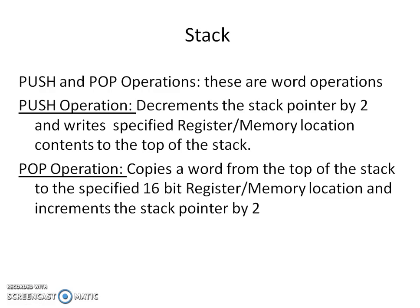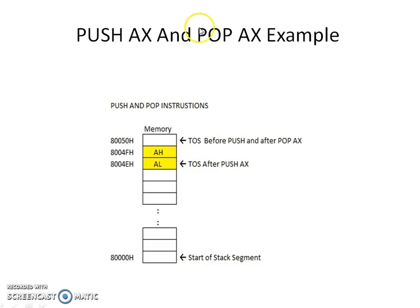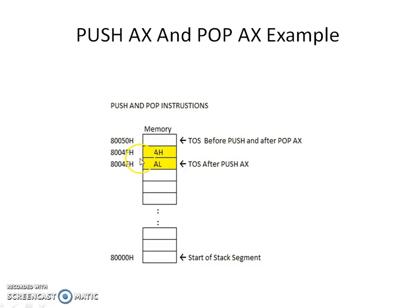Looking at the stack segment during push and pop operations using the example of PUSH AX: initially the top of the stack is pointing to location 8005H. When you push AX onto the stack, first the SP contents get decremented by 1, and the top of the stack now points to 4FH where the AH contents get stored. Then the stack pointer gets decremented by 1 again, and at 8004EH the AL contents get stored. The top of the stack is now pointing here after the PUSH AX instruction.